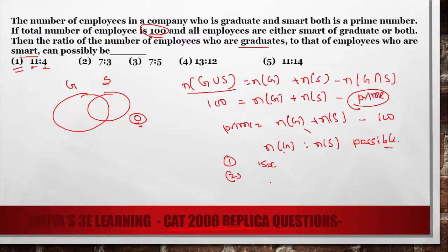Option number 2 gives 7 plus 3, which is a 10x condition. Option number 3 gives a 12x condition. Option number 4 gives a 25x condition. Option number 5 is again a 25x condition. So we want ng plus ns minus 100 to be a prime number.